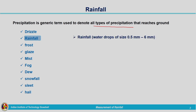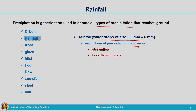Rainfall consists of water drops of size 0.5 to 6 millimeters. This is the major form of precipitation; because of this we are experiencing stream flow and flood flow in rivers. All these things are mainly due to rainfall, so it is very important to have knowledge about rainfall and first we need understanding related to its measurement.